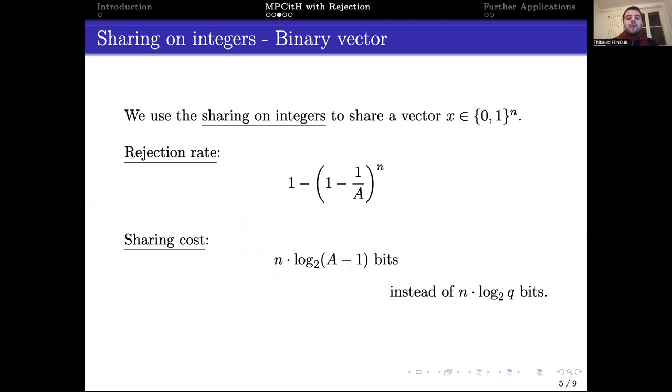When sharing a binary vector, the rejection rate of our proposal is given by this formula. Moreover, the communication cost due to this sharing is given by n times log of A bits instead of n times log of q bits. Using this sharing, we can decrease significantly the communication cost while having a possibility to abort when performing the proof.